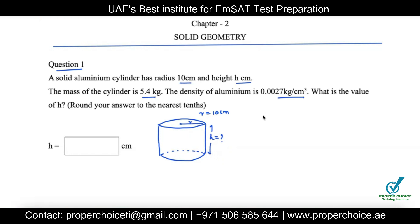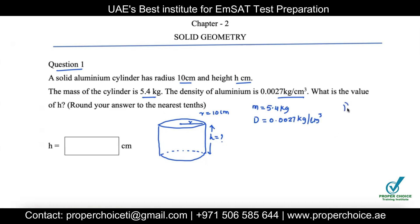To find the height, we first need the volume of the cylinder — without knowing the volume, we can't find the height. Here, two quantities are unknown: volume and height. We can use the other information given. The formula is: density equals mass divided by volume. Rearranging, volume equals mass divided by density.